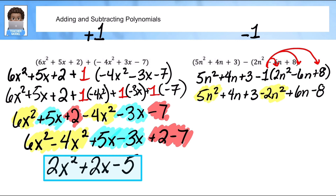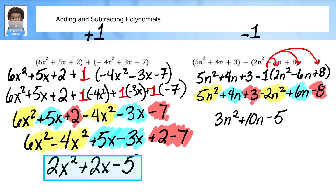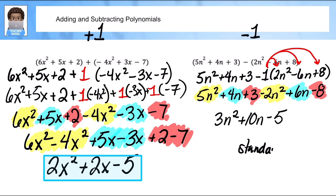Now I'm just going to identify my like terms — my second-degree terms, my first-degree terms, and my zero-degree terms. Five minus two is three, so three n squared. Four plus six is ten, so ten n. And three minus eight is negative five. Just double-checking: it's a second degree, a first degree, and a zero degree — so it is already in standard form. This is our final answer.